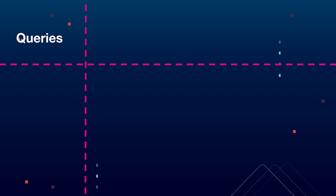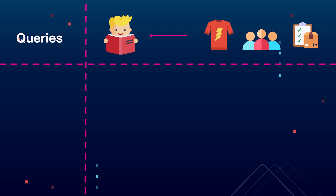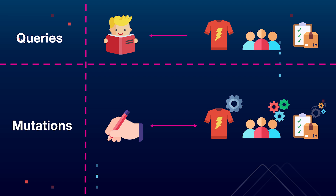First, we have queries, which are used to fetch data from the server — they do not modify or change any data. This is purely for reading data: data about products, orders, customers, or the shop itself. And on the other hand, we have GraphQL mutations, which are used to modify data. So we can create, delete, or update data. For example, we could change a product title, create a new order, or update customer information.